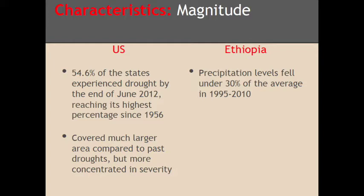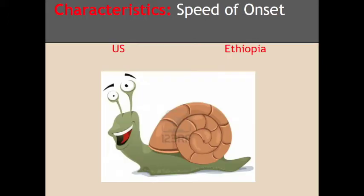In many parts of Ethiopia, the precipitation rate during the rainy season fell under 30 percent of the average from 1995 to 2010, affecting mainly agricultural production and triggering much larger consequences. Generally, the speed of onset of droughts is very slow in comparison to other hazards such as earthquakes or hurricanes. This is true for both case studies, where it is hard to determine a specific point in time when the drought started, as the effects can take a long time to appear.